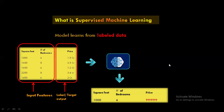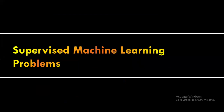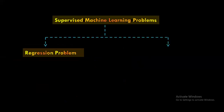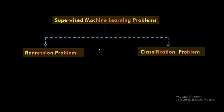Hope you understood what supervised machine learning is all about. Next, we will take a look at the two different problems we can address as part of supervised machine learning. The first is the regression problem and the other is the classification problem. A regression problem involves predicting a continuous numerical target value — for example, housing price or stock price. Since these are continuous numerical values, you can use regression-related algorithms like linear regression, support vector machine, random forest, and XGBoost.